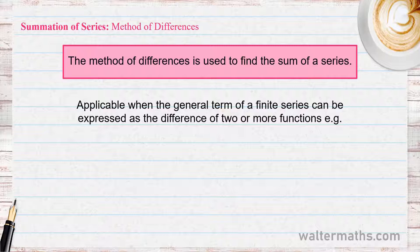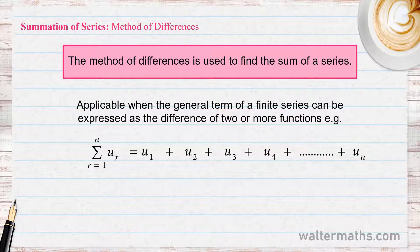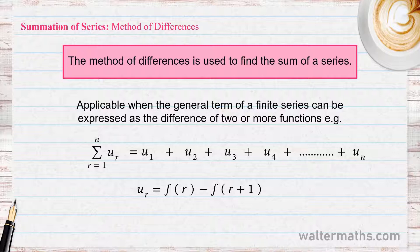Let's say we have a series represented by the summation from R equals 1 up to N of terms of the form U sub R. If U sub R can be expressed as a difference between two functions — for example, U sub R equals F(R) minus F(R+1) — then the method of differences can be applied to find the sum of the series.